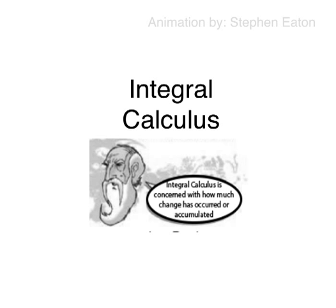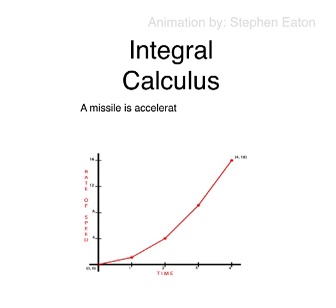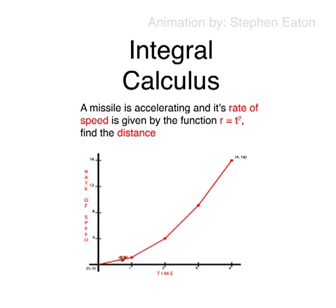Integral calculus is the branch of mathematics that is concerned with how much change has occurred. For example, if a missile is accelerating and its rate of speed is given by the function rate equals time squared, find the distance in miles that the missile has traveled by t equals 4 minutes.